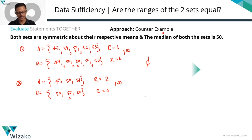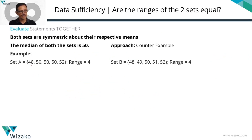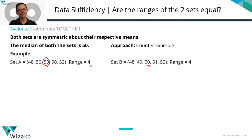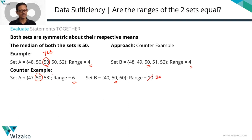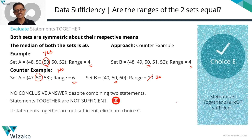From the printed form: Set A as 48, 50, 50, 52 with range = 4, median = 50, symmetric about mean — all conditions satisfied. Set B also in AP with median 50, 5 elements, range = 4: answer yes. Counterexample: A as 47, 50, 53 (range = 6, AP, symmetric); B as 40, 50, 60 (median = 50, AP, symmetric, range = 20). Ranges differ — answer no. Together the statements give no conclusive answer. Eliminate C. Choice E is correct.